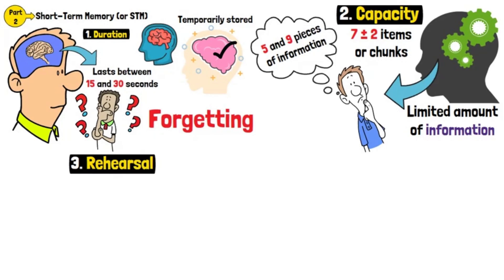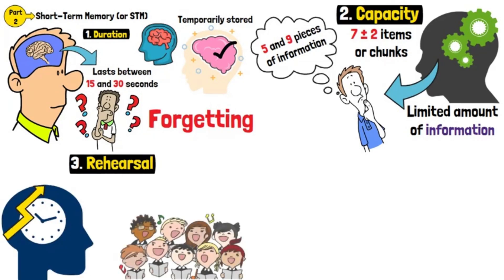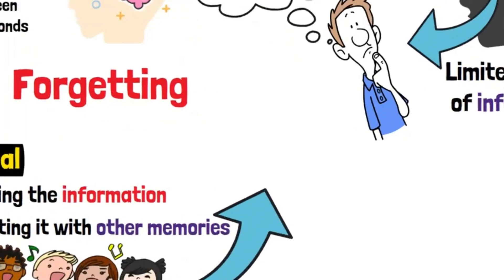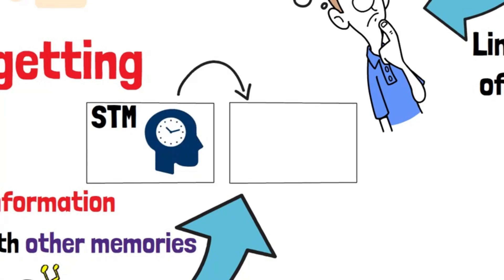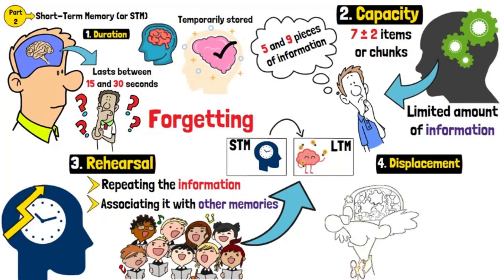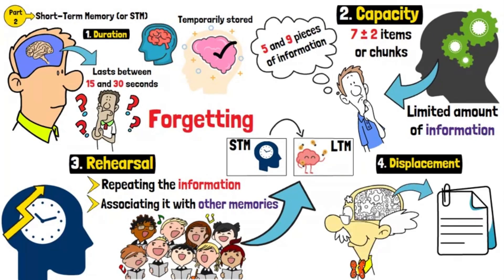Rehearsal: To extend the duration of information in STM, we use rehearsal — either by repeating the information or by associating it with other memories. Rehearsal can help transfer information from short-term to long-term memory. Displacement occurs when new information pushes out old information in memory.